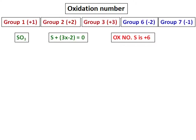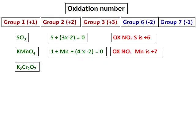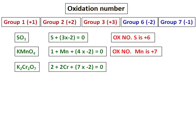Let us proceed further and find out the oxidation number of various other elements in some other compounds. Next one is potassium permanganate. I am calculating the oxidation number for manganese because potassium, belonging to group 1, has the oxidation number of positive 1, and oxygen is negative 2. When I calculate it, I get the oxidation number for manganese as positive 7. Then for potassium dichromate, K2Cr2O7, we calculate the oxidation number of chromium and that comes as positive 6.